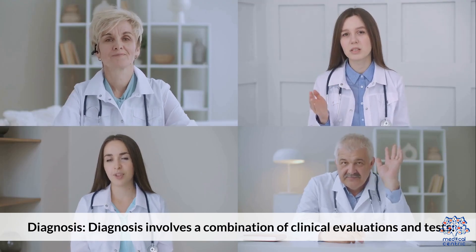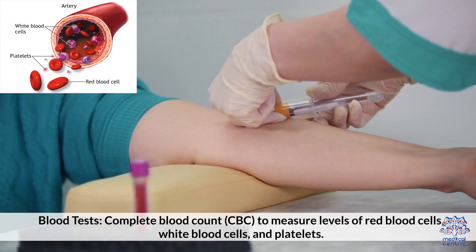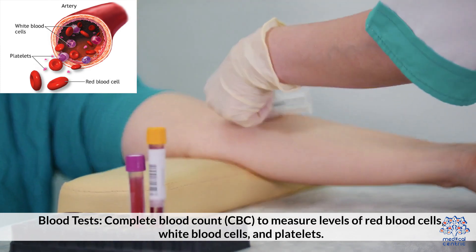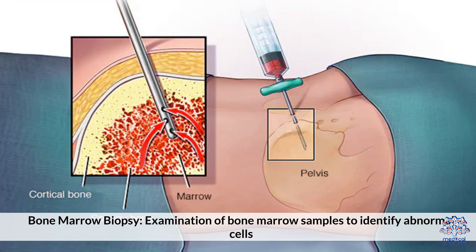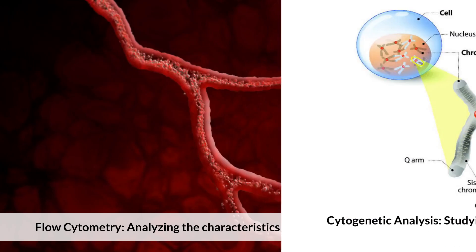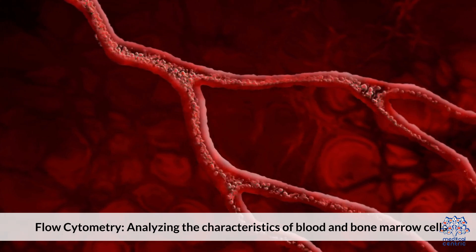Diagnosis. Diagnosis involves a combination of clinical evaluations and tests: 1. Blood tests — complete blood count (CBC) to measure levels of red blood cells, white blood cells, and platelets. 2. Bone marrow biopsy — examination of bone marrow samples to identify abnormal cells. 3. Cytogenic analysis — studying the chromosomes of bone marrow cells for abnormalities. 4. Flow cytometry — analyzing the characteristics of blood and bone marrow cells.